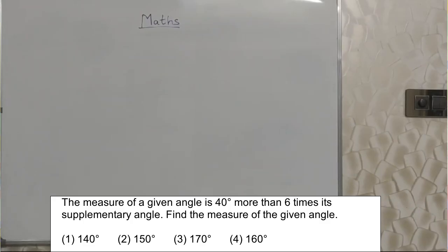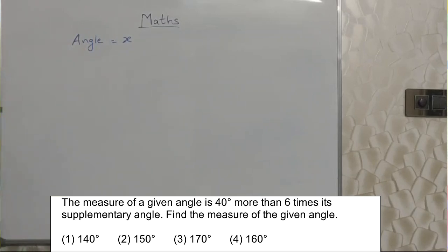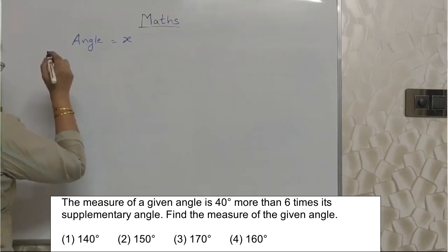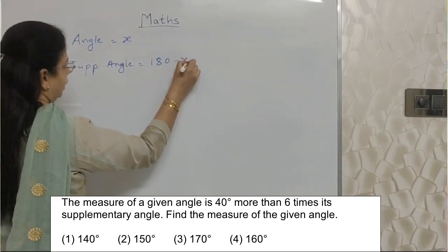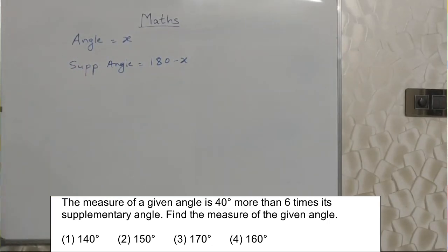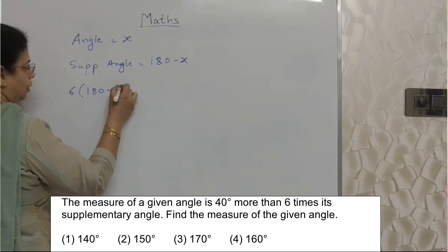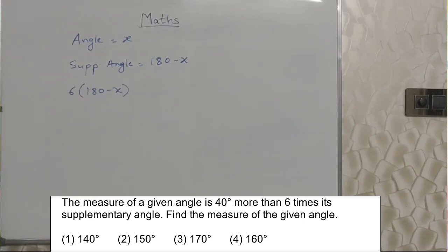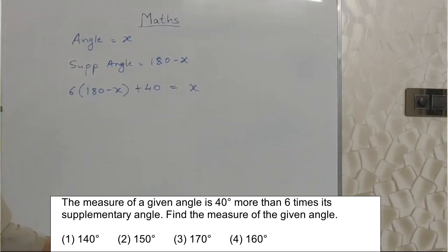Students, read the next sum properly. The measure of the given angle is 40 degrees more than 6 times its supplementary angle. Find the measure of the given angle. Let's assume the angle as x. Now, the supplementary angle is 180 minus x. The question says 40 degrees more than 6 times the supplementary — so first we take 6 times the supplementary, which is 6 into (180 minus x), then add 40 to get the angle.